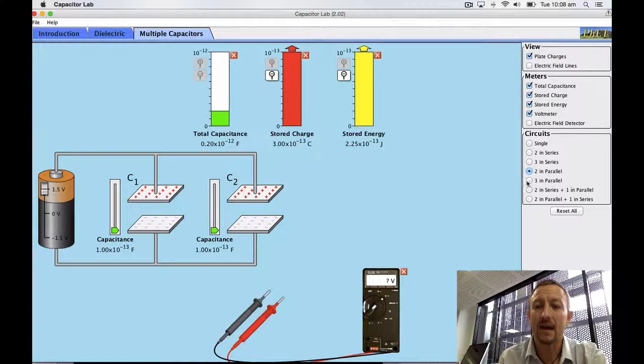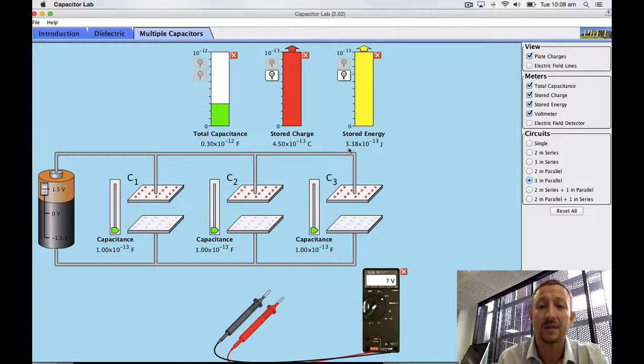So let's put one more in and see if it still obeys the rule. Remember it's 2.25 times 10 to the negative 13 joules here. Put another one in, I've gone up to 3.38 times 10 to the negative 13 joules. So I've got a lot more energy.